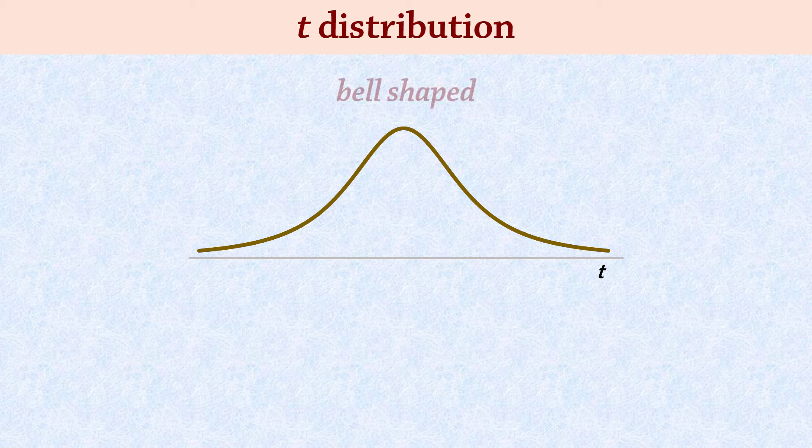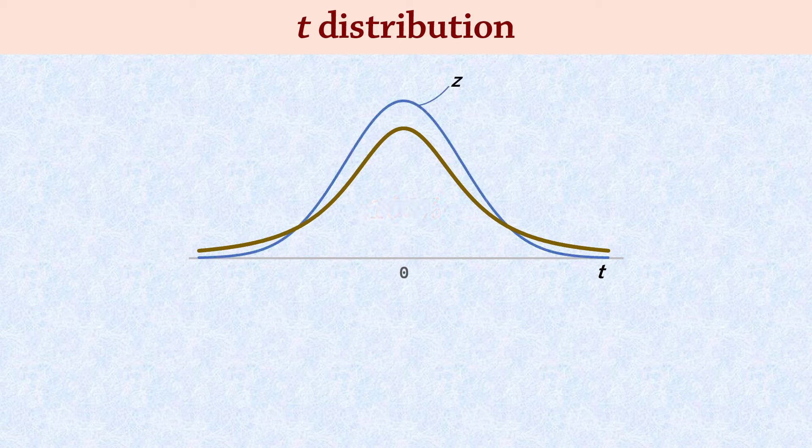The T distribution is similar to the standard normal distribution in that it is also bell-shaped, has a mean of 0, and has an area of 1 or 100% under the curve. However, it has a standard deviation greater than 1 which makes it flatter than the Z distribution.